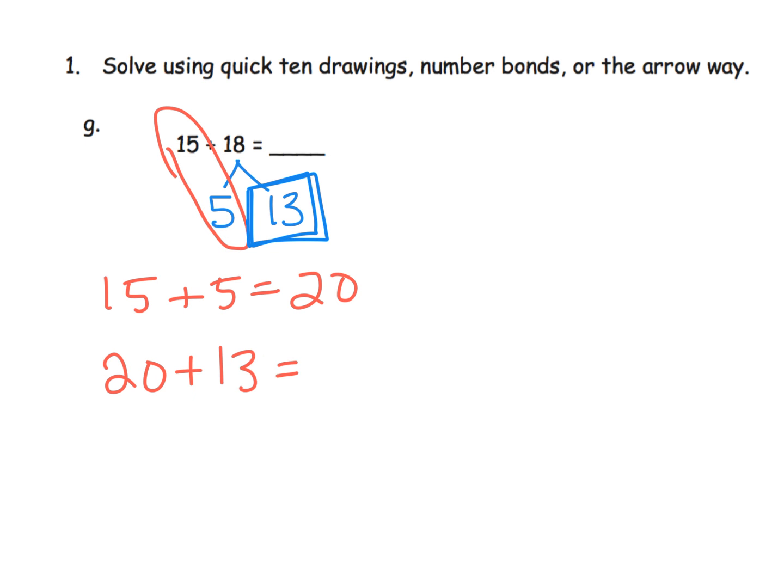And that gives me 33. And again, there's a variety of ways that students might go from 20 plus 13 and get the answer of 33. Likely, they'll decompose 13 and decompose it to be 10 and 3 and add that 20 and 10 in their head and then get, add in the remaining 3.